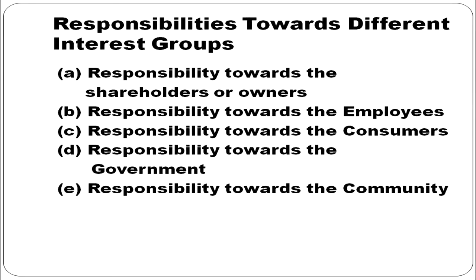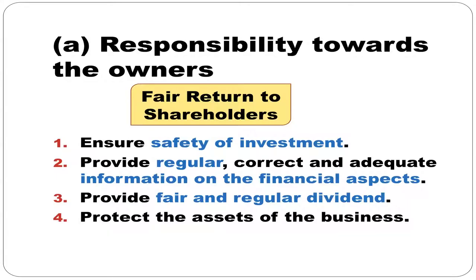Let us discuss the responsibility towards different interest groups: shareholders, employees, consumers, government, and community. Business has a responsibility towards owners — to provide fair return to shareholders, to ensure safety of investment, to provide correct, regular, and adequate information on financial aspects, to provide fair and regular dividends, and to protect the assets of the business.